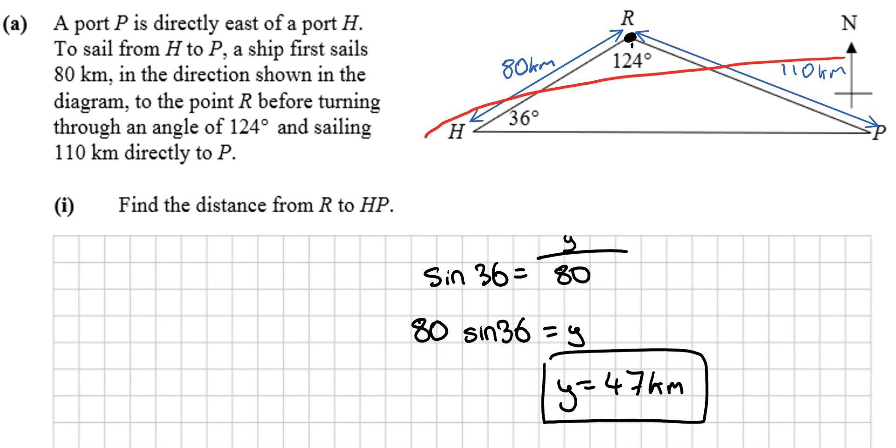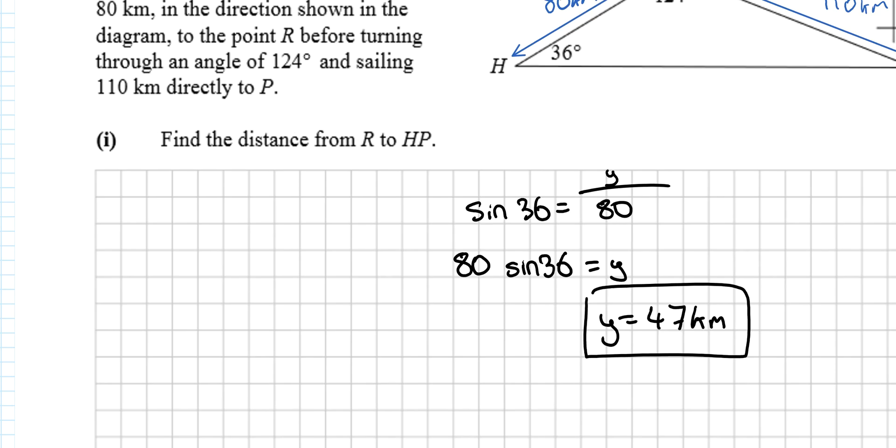Using the sine rule: a over sine A equals b over sine B. So a over sine 124...